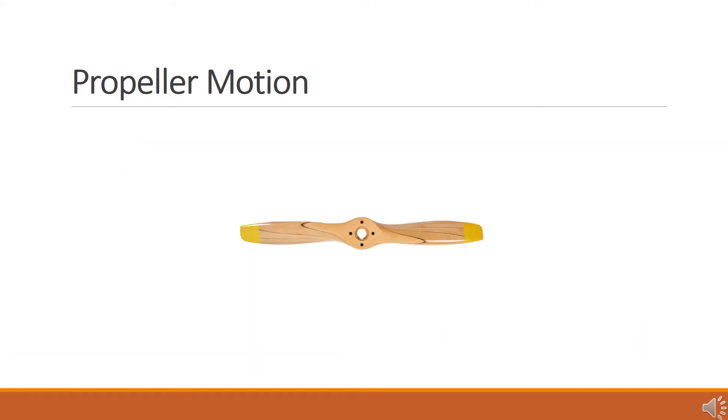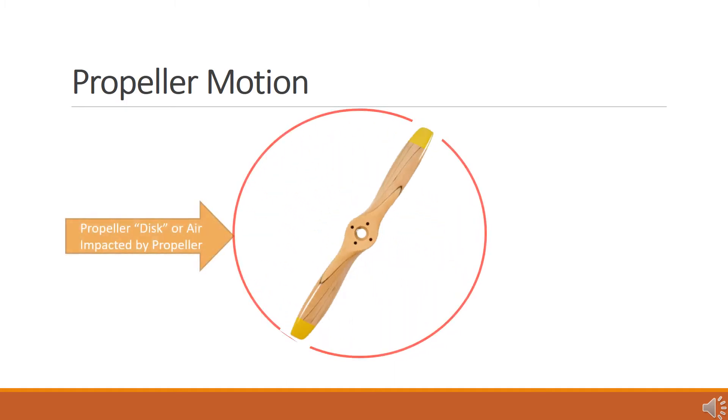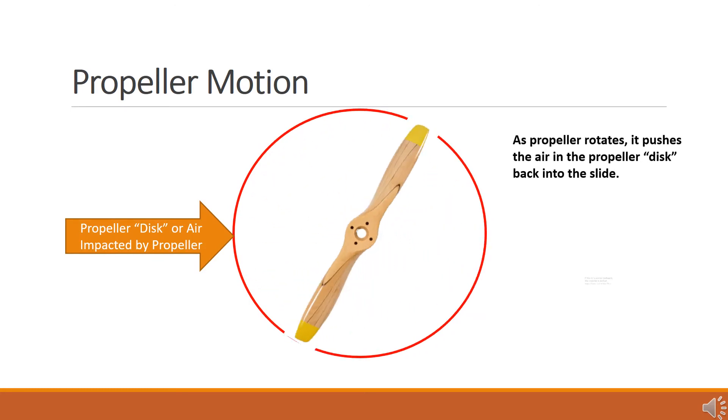In general terms, a propeller is a type of fan that transmits power by converting rotational motion into thrust. An action-reaction system is developed where the propeller pushes the fluid, in this case air, toward the rear of the aircraft causing the aircraft to move forward. This action is similar to those used by aircraft wings to develop lift and can be modeled by either concepts developed by Daniel Bernoulli or Isaac Newton.